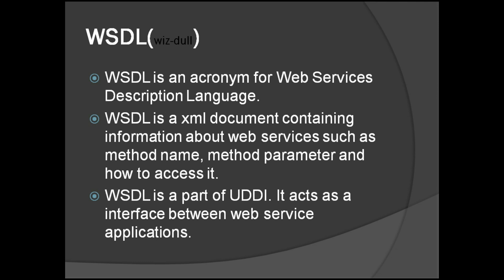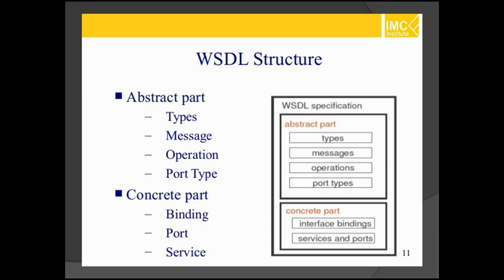WSDL is a part of UDDI, and it acts as an interface between web service applications. It is pronounced as WSDL. So let's see the structure of WSDL, which has two parts: one is the abstract part and another is the concrete part. An XML document — that is, a WSDL XML document — will be in this format, having these two parts: the abstract part and the concrete part.